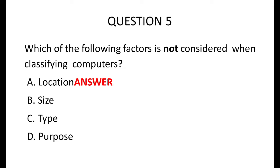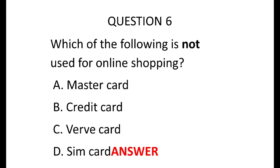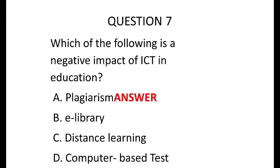Now let's move to question number six. Question six says: which of the following is not used for online shopping? The answer is SIM card. Option D — you can use your Mastercard to buy things online. Your credit card can be used. Your web card can be used to buy things online.